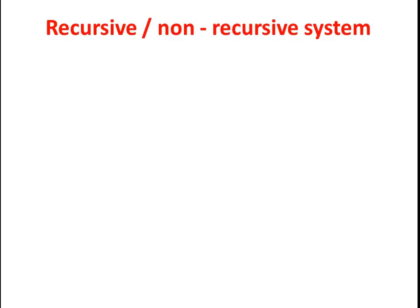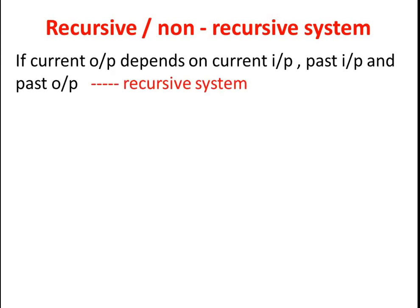If the present output of a system depends on the current input, past input, as well as past output, then we can say the type of system is a recursive type of system. The present output y[n] contains the present input, past input, as well as past output. So if a system output depends on present input, past input, and past output, then it is a recursive type of system.